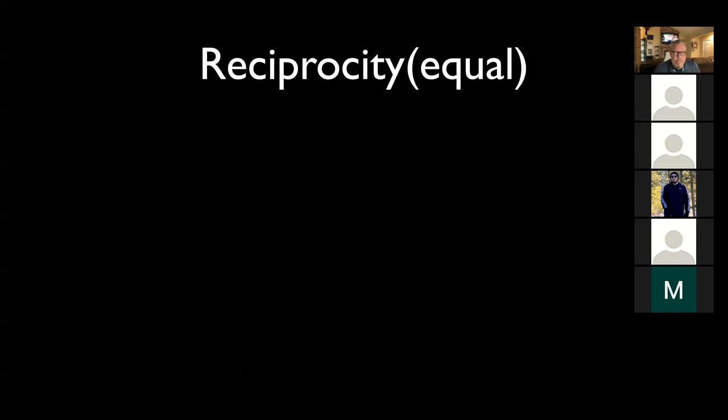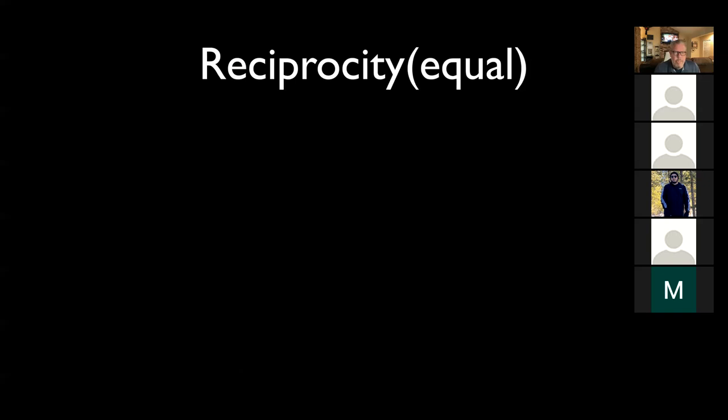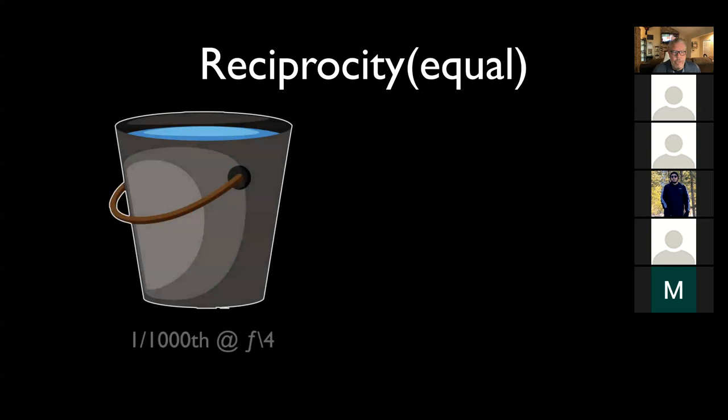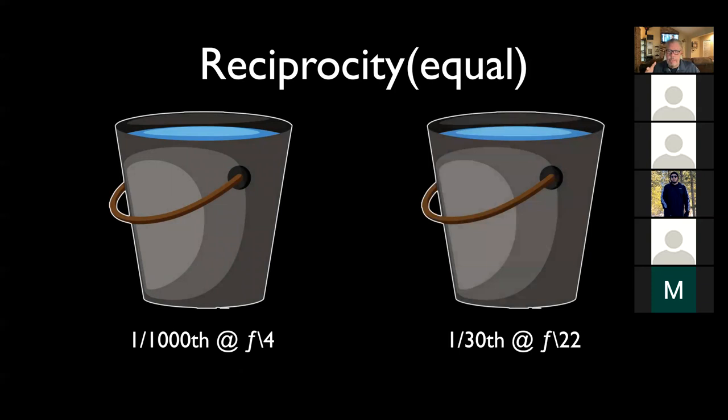There's this thing called reciprocity when we talk about photographic exposure - reciprocity is another way of saying something's equal to each other. So if I use a shutter speed of one one-thousandth of a second with a wide open aperture and it filled the bucket up, that's the exact same exposure as using one thirtieth of a second - a really long shutter speed - at f/22, a really small aperture. Those two things equal each other. And don't worry, I'm not going to put that on the test.